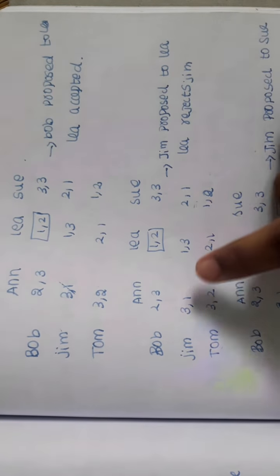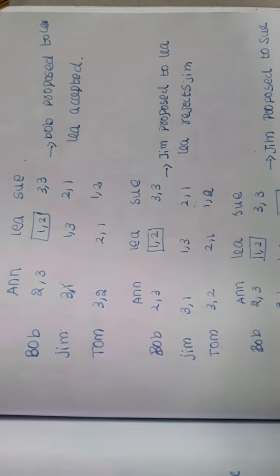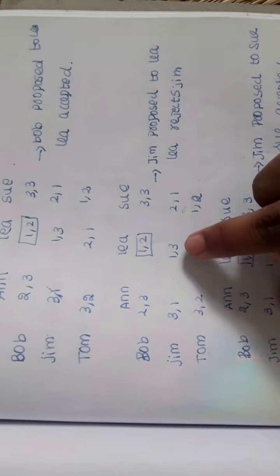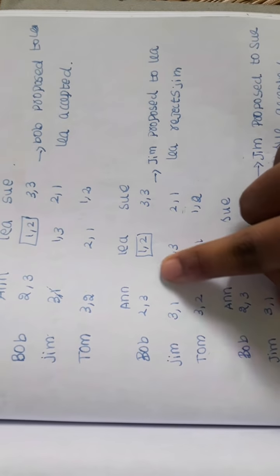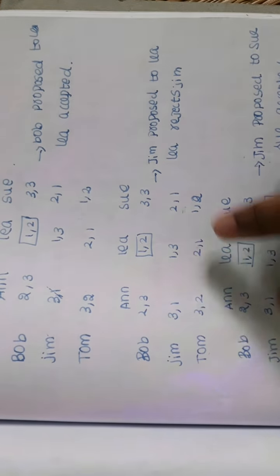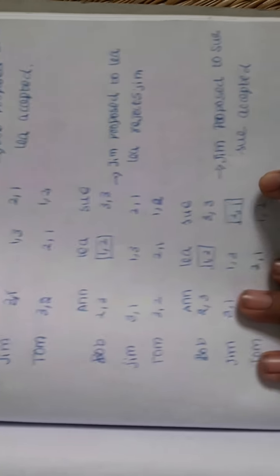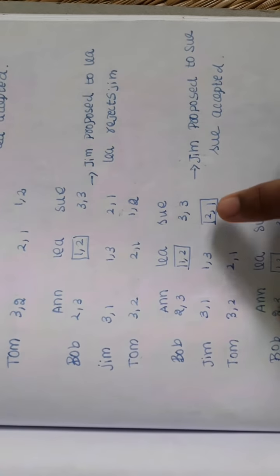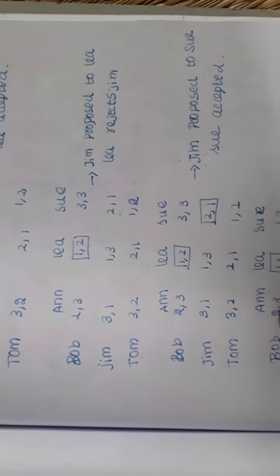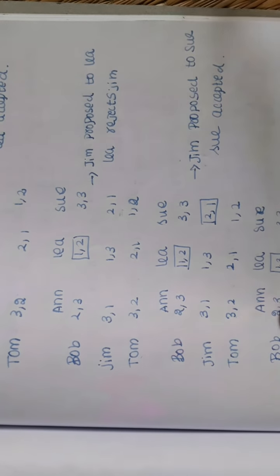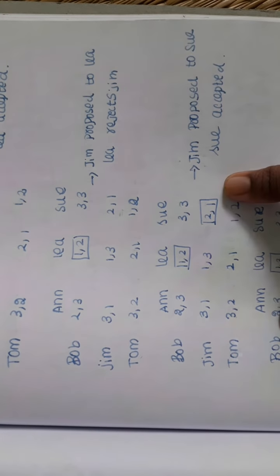So what do we do now? Next, the first preference fails. So what do we do? Sue will propose. Sue will accept.